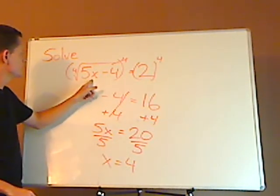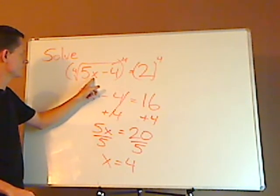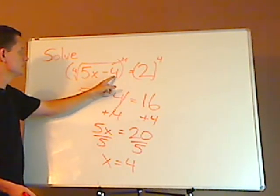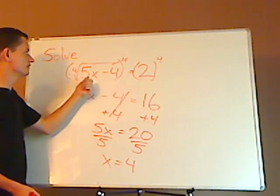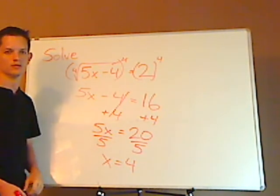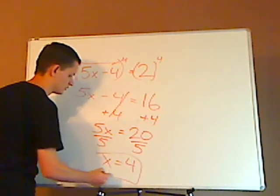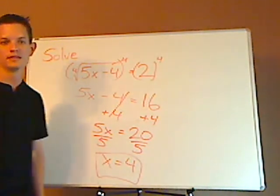So here, if I plug it in, I get 5 times 4, which is 20, minus 4, which is 16. The fourth root of 16 is a positive 2, so that would be correct. And that's it.